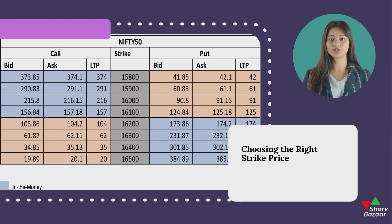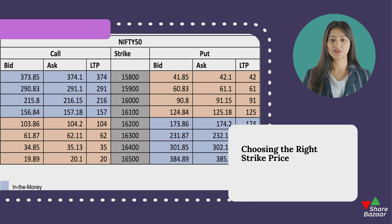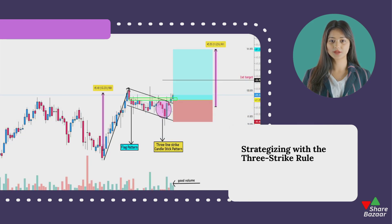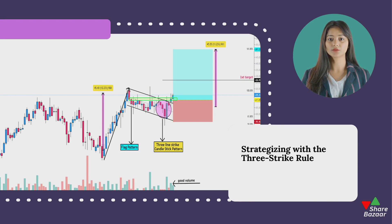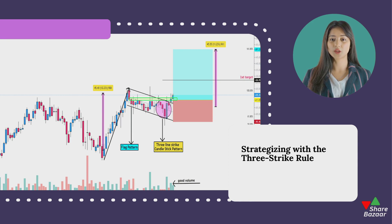The key here is to choose a strike price for the call option you're selling that's above a level where you think the stock might face resistance. When anticipating a resistance level higher than the current market price, the three strike rule can be used to determine the optimal strike price for a call option. For example, if the Nifty 50 index is currently trading at 22,475, the call option with a strike price of 22,500 is the closest to the current market price, or ATM.